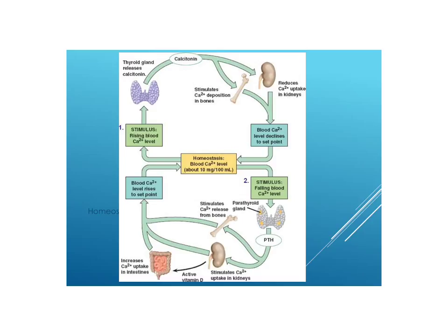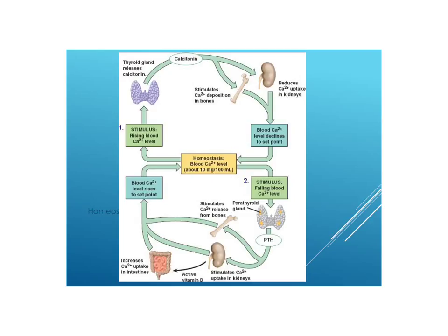The other stimulus that could happen is a falling calcium level. Perhaps you're doing some activity that requires a lot of calcium, or your levels have dropped. In this case, the parathyroid gland is stimulated to secrete a hormone called PTH, or parathyroid hormone, and that does two things: it stimulates calcium to be released from the bones, and it stimulates the uptake of calcium in the kidneys. It also stimulates the release of vitamin D and increases calcium uptake in the intestines. Both PTH and calcitonin work simultaneously to monitor blood calcium and maintain it at about 10 milligrams per 100 milliliters.